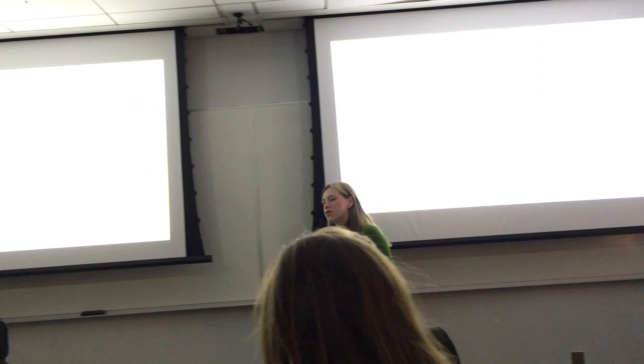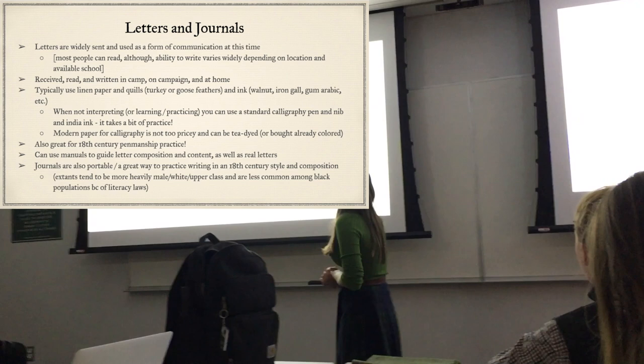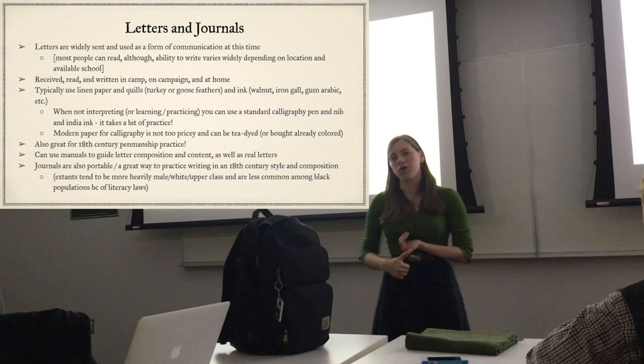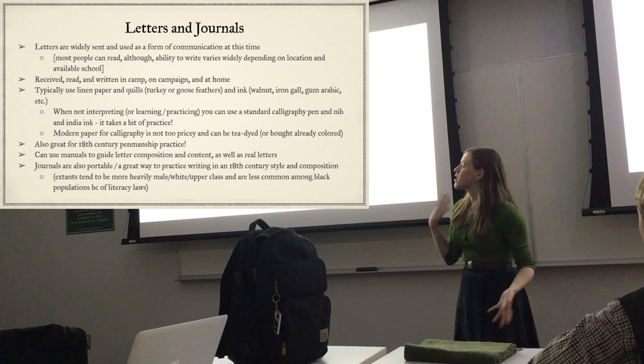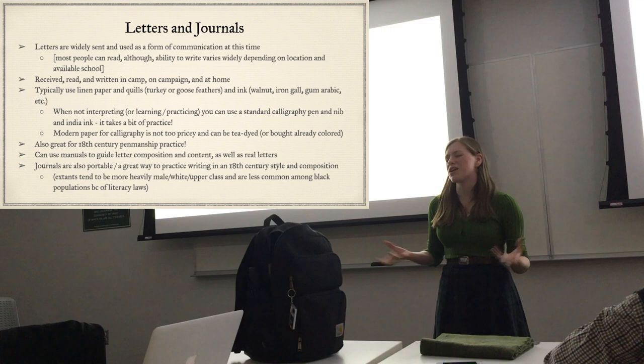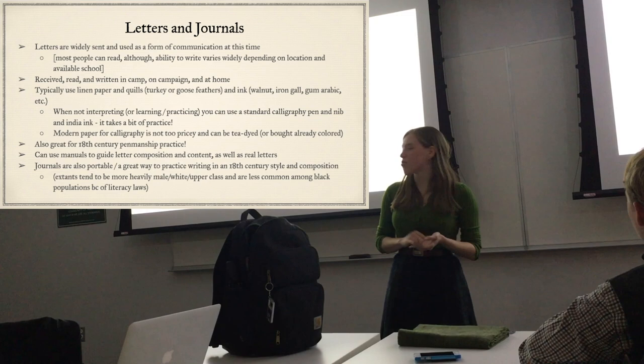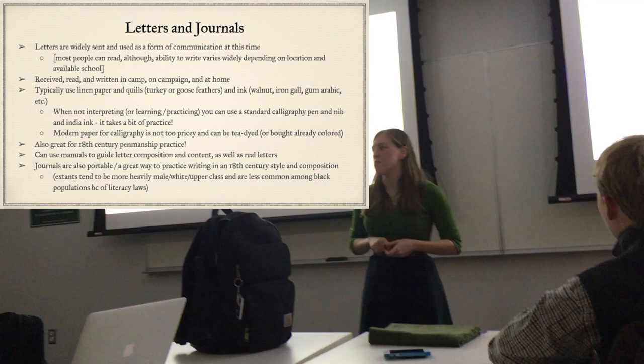Our next item is letters and journals. During this time, letters are widely sent and used as a form of communication, and most people can read - writing is a whole different thing, depending on your class, location, schooling, and gender. Letters are received, read, and written in camp, on campaign, and at home. The postal system was getting pretty robust. Typically, linen paper and quills - usually turkey or goose feather - and ink, which can be walnut, iron gall, or gum arabic. We actually had walnuts falling from the trees near Blair - if you boil them, you can get some nice ink.